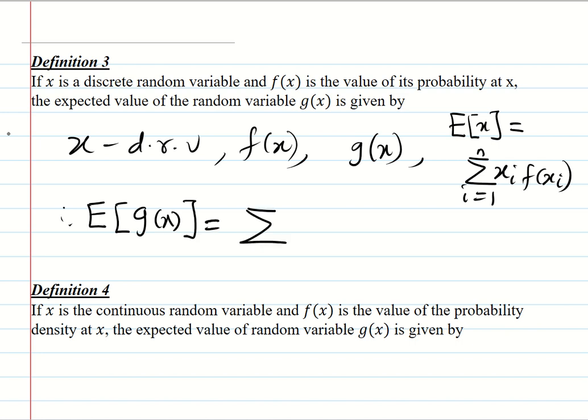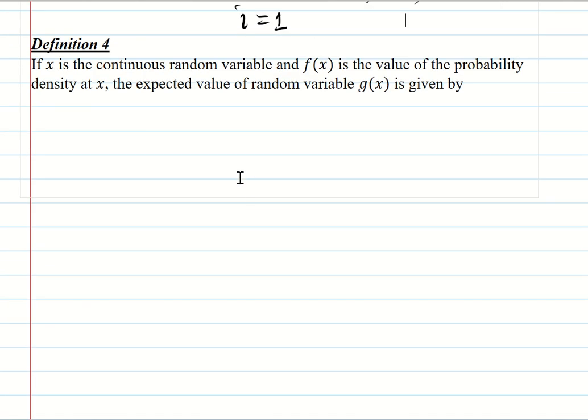summation i equals 1 to n, G(x_i) times f(x_i). Now similarly for a continuous random variable X,